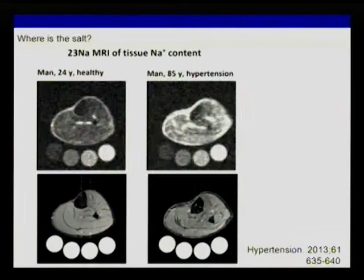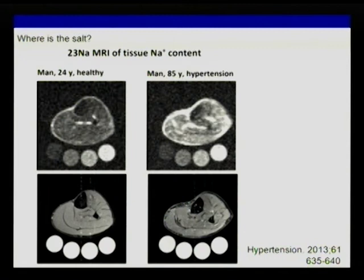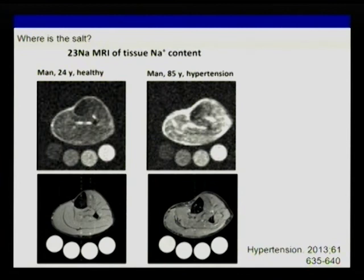What you see here is a lower limb. We currently use a knee coil. There are four test tubes with increasing sodium concentration — everything white is sodium. This is a 24-year-old healthy man, and this is an 85-year-old man with hypertension who is massively sodium overloaded. This is water — no volume retention. So hypotonic accumulation in skin and muscle. Here are 113 subjects, and you see that we all accumulate a lot of sodium with age, while water content is maintained constant — confirming hypotonic sodium accumulation at the tissue level with no marker discoverable in blood.